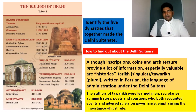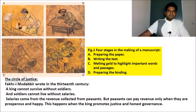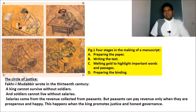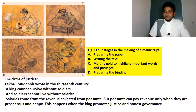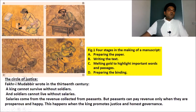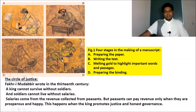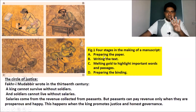Now let us see how a manuscript is made. As you can see on the screen, the making of manuscripts is divided into four stages: stage one, stage two, stage three, and stage four.